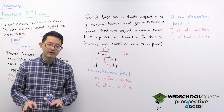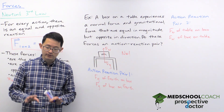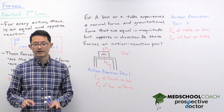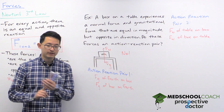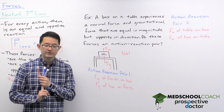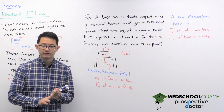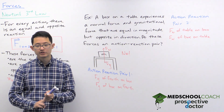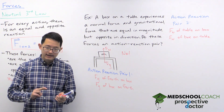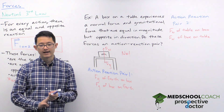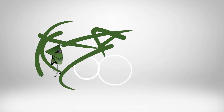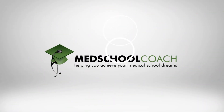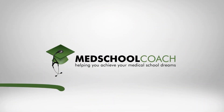To summarize, there are three requirements for action-reaction pairs: they have to be the same type of force, they have to be equal in magnitude and opposite in direction, and they have to act on different objects.